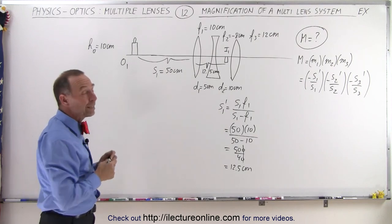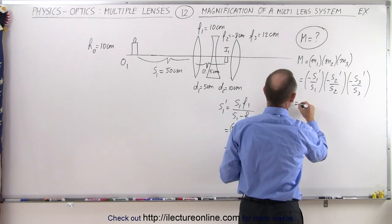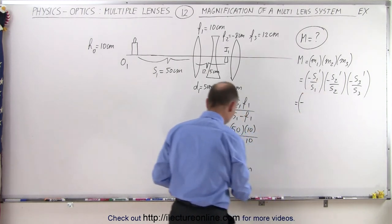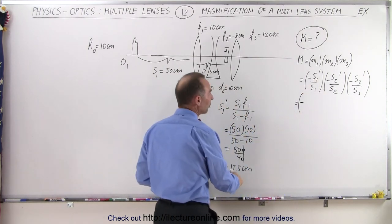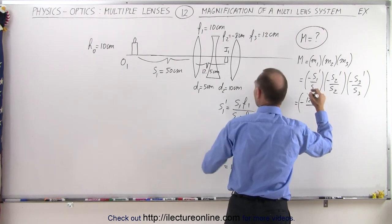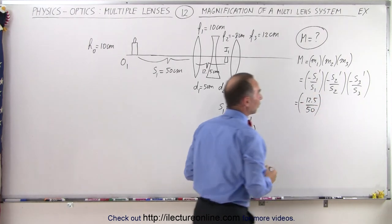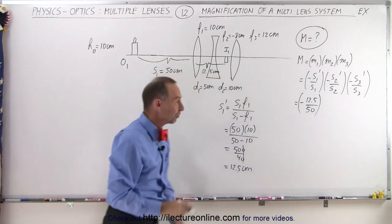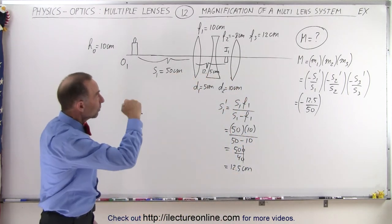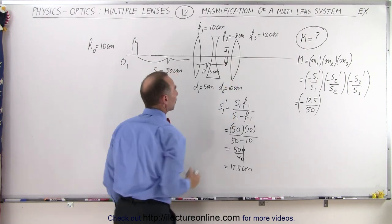What will be the magnification? M1 is equal to minus the image distance, which is 12.5, divided by s1, which is 50 — that gives us negative one quarter for the first magnification. It's negative, which means the image is going to be upside down, just as expected.